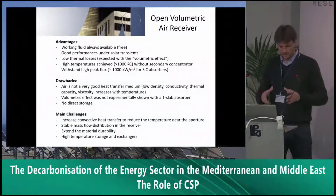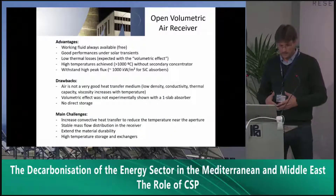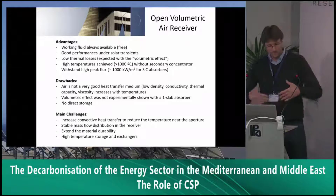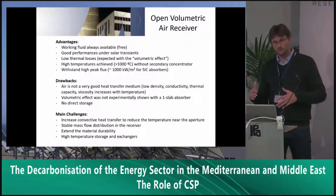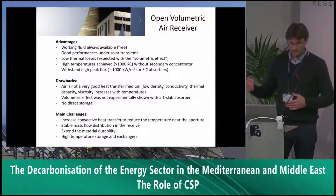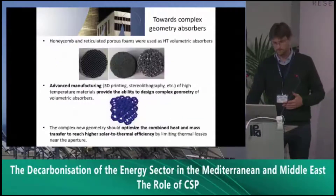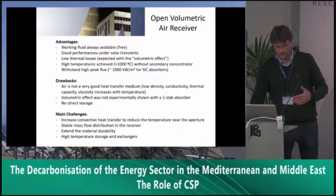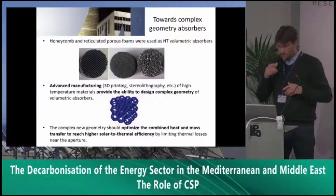The main challenge of this technology is to find a way to obtain the volumetric effect with one material and one slab. One key point is to increase the convective heat transfer near the aperture to reduce the temperature there. Once this is fulfilled, the further challenges will be to obtain a stable mass flow distribution in the receiver, extend material durability, and find economically viable and efficient high temperature storage and exchangers. I will now focus on the first point — increasing convective heat transfer near the aperture — since all other challenges depend on it.